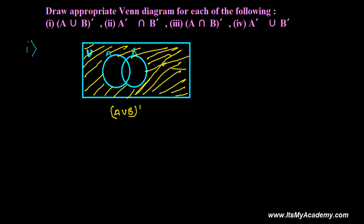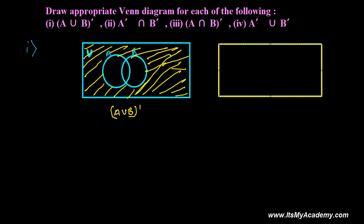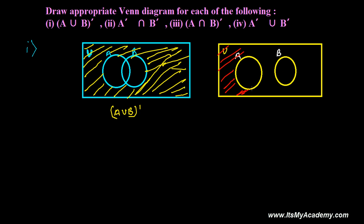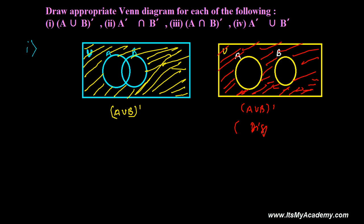And what if it is a disjoint set? If it is a disjoint set, things will be something different. Suppose this is U and if this is disjoint, both sets will be away, not connected with each other. Let me suppose this is A and this is B. A union B complement means all the elements of A and all the elements of B, and except those we need to take — so the outside region. This is A union B complement for the disjoint set and for intersecting sets.